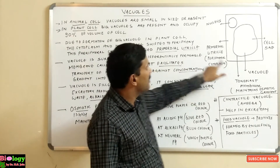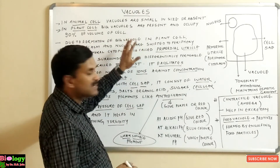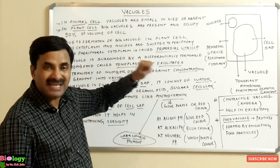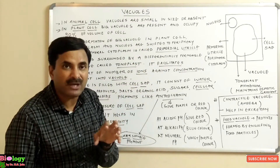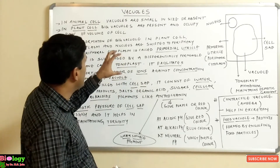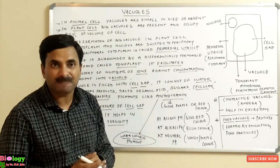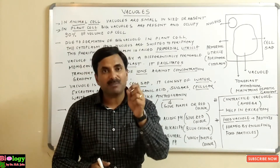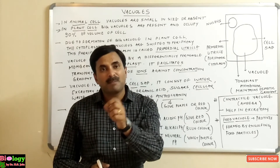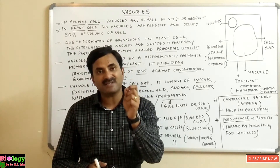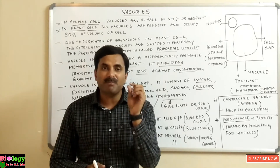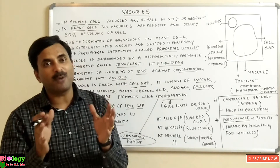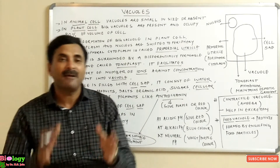I have made a plant cell in front of you. If you view a plant cell, you will be able to see that a big vacuole is present at the center, and due to the presence of this big vacuole, the vacuole occupies 90% of the volume of the cell. In the young cell condition, many small vacuoles are present which later on combine together to form a big vacuole.